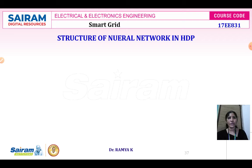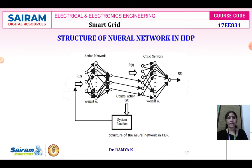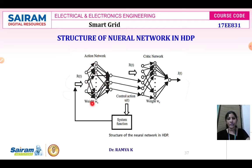The structure of the neural network comprises three layers: input layer, action network, and critic network. Each layer of the action network is connected to each layer of the critic network. The action network comprises three layers — input layer, hidden layer, and output layer. Each input layer node is connected to hidden layer nodes, and each hidden layer node is connected to the output layer. Weight recalculation is done at the hidden layer, and the system function is taken as input for the input layer.